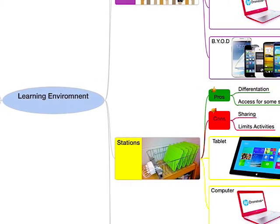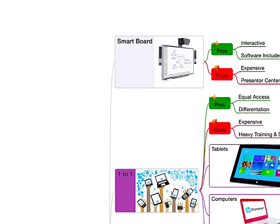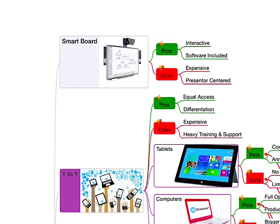Let's take a look at some of the types of technology. For example, smart boards. Smart boards are a great tool and a great type of technology. We have the pros: it's interactive, and it has some great software that's included. And some of the cons: it is expensive, and it is presenter-centered. Of course, for each of these there are more cons and more pros, but we're only going to focus on a few.